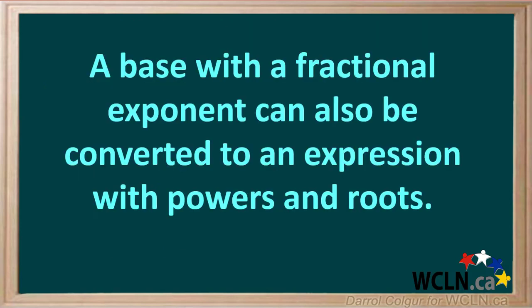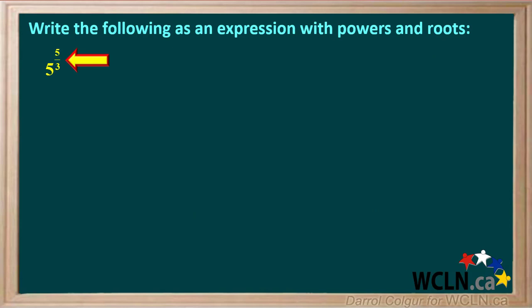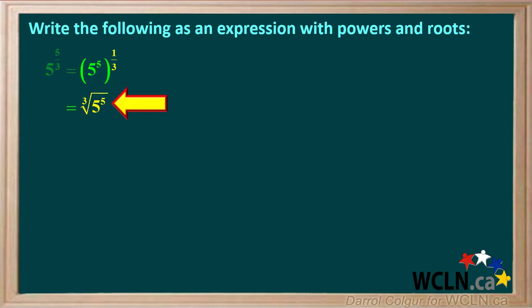If we're given a base with a fractional exponent, we can also convert it to an expression with powers and roots. We're given 5 to the power of 5 thirds and asked to write it with powers and roots. Since 5 thirds is the same as 5 times 1 third, we can write 5 to the power of 5 in brackets and raise it to the power of 1 third. Something to the 1 third power means the cube root, so we're left with the cube root of 5 to the 5th, where 5 to the 5th is under the cube root sign.